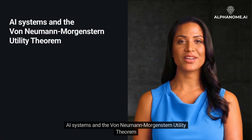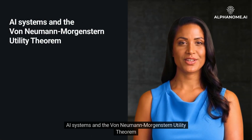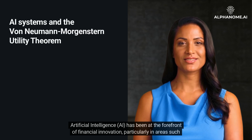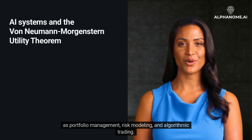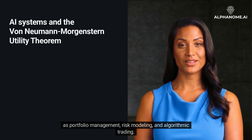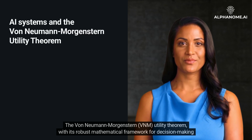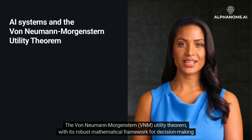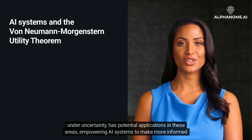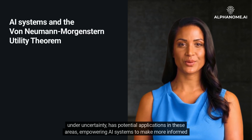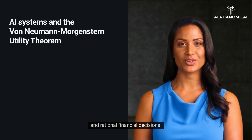AI Systems and the Von Neumann-Morgenstern Utility Theorem. Artificial intelligence has been at the forefront of financial innovation, particularly in areas such as portfolio management, risk modeling, and algorithmic trading. The VNM Utility Theorem, with its robust mathematical framework for decision-making under uncertainty, has potential applications in these areas, empowering AI systems to make more informed and rational financial decisions.